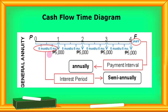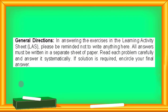Cash flow time diagram for general annuity. The payment interval is still yearly, and the compounding interest rate period is every six months — semi-annually. So the payment interval, which is annually, and the interest rate period, which is semi-annually, are not the same. So we have a general annuity.